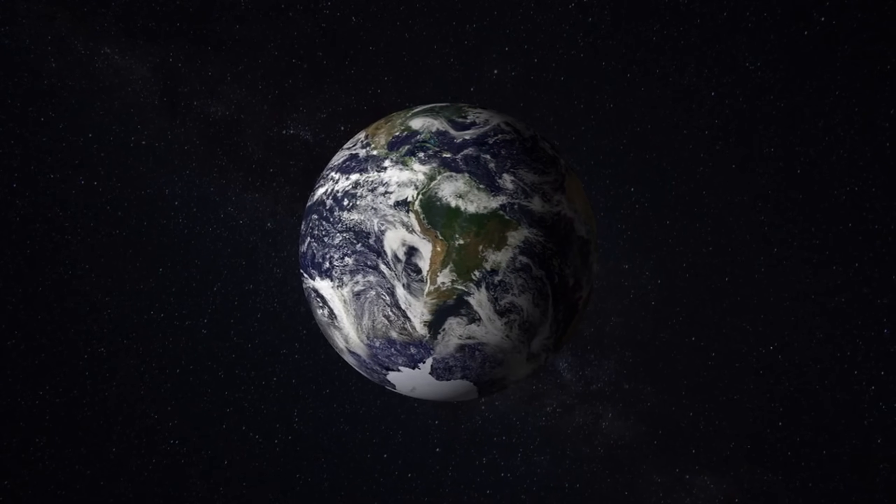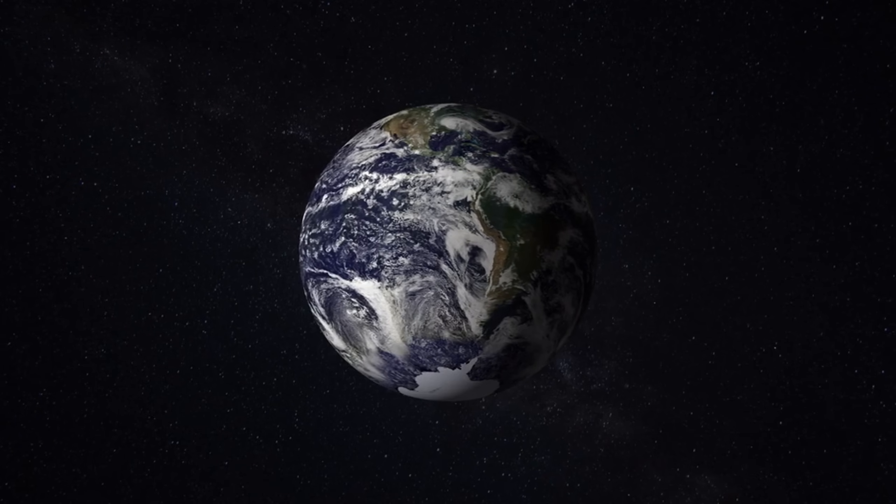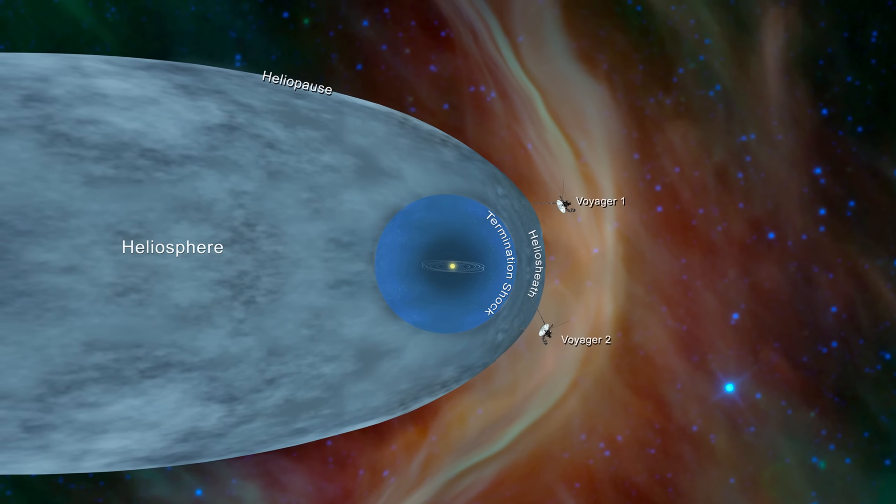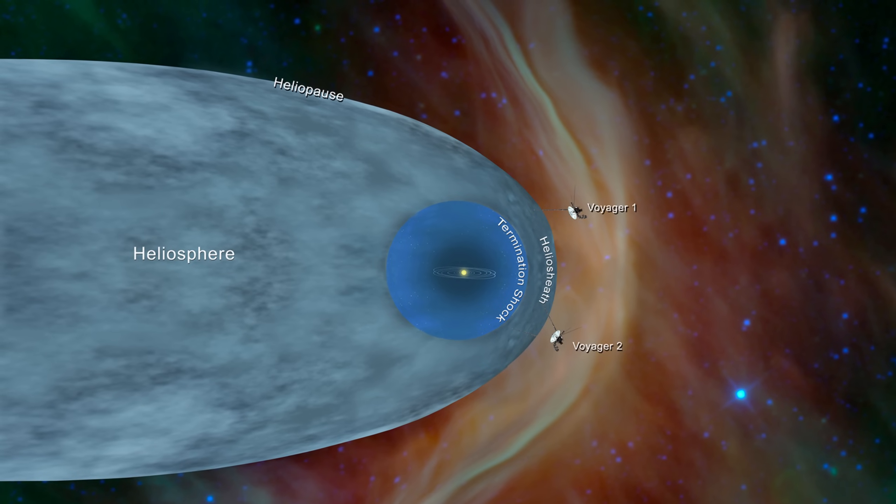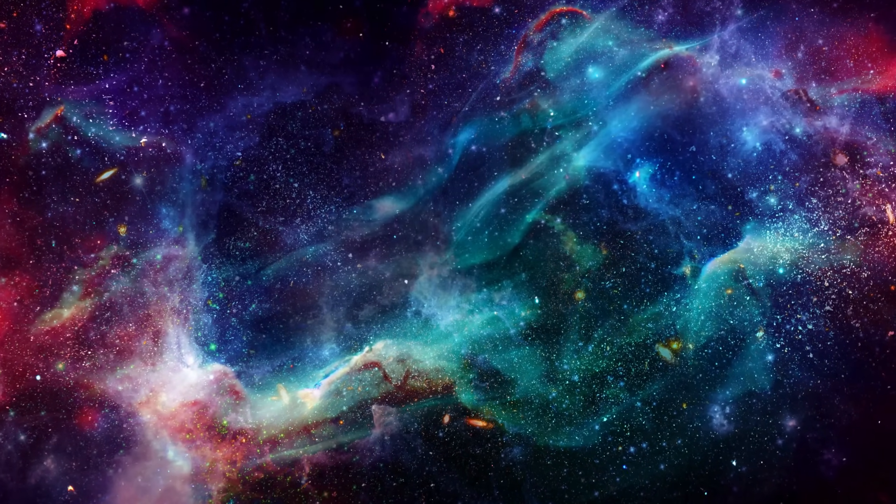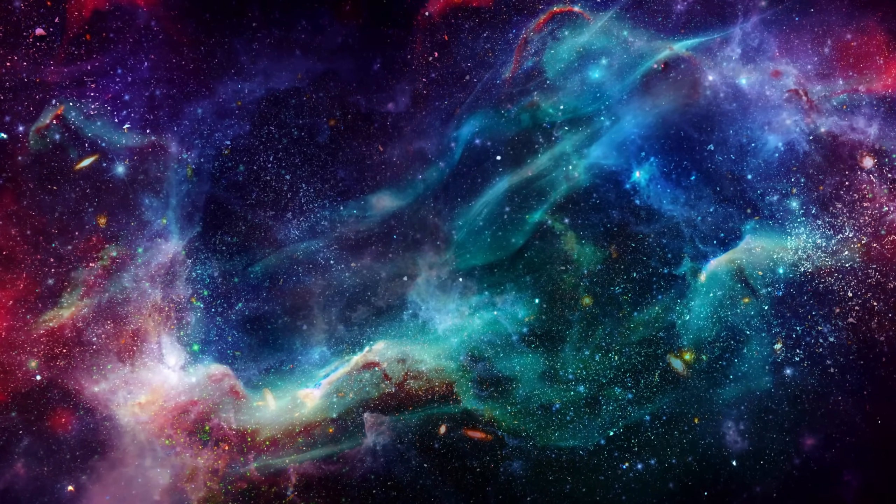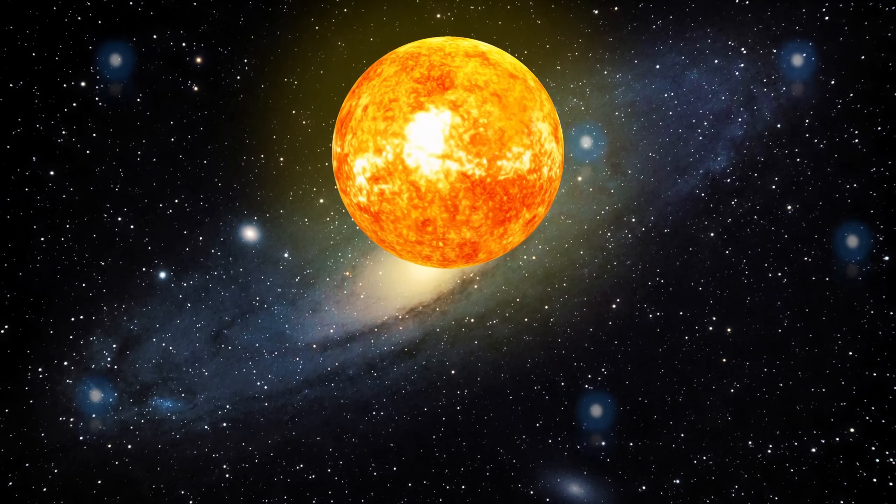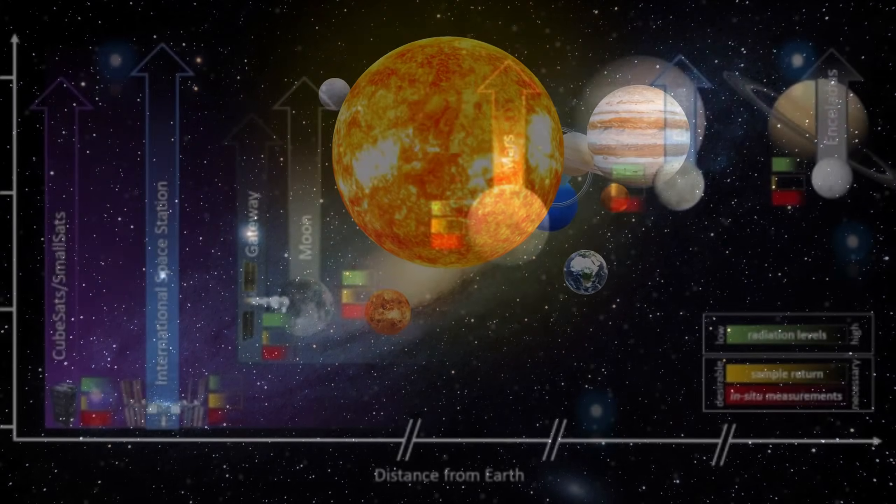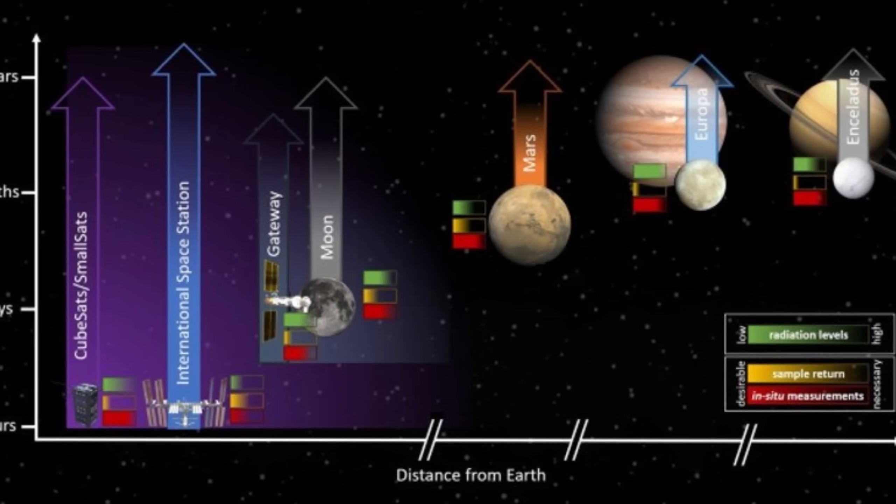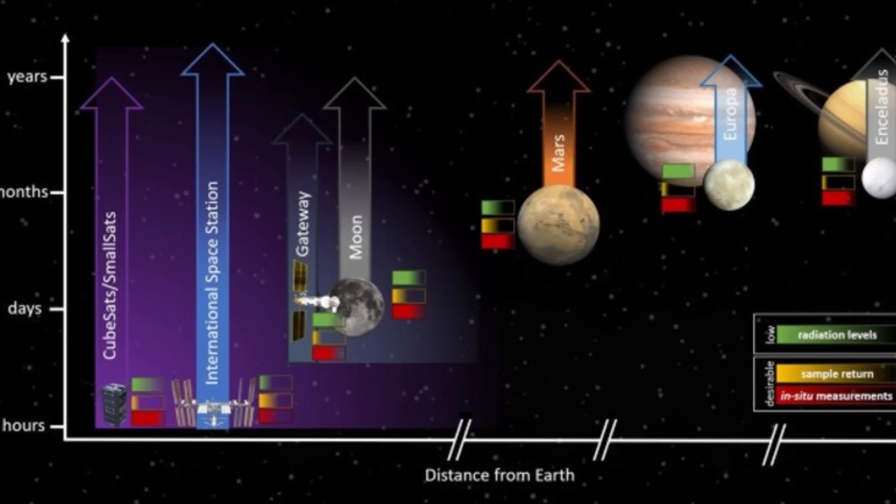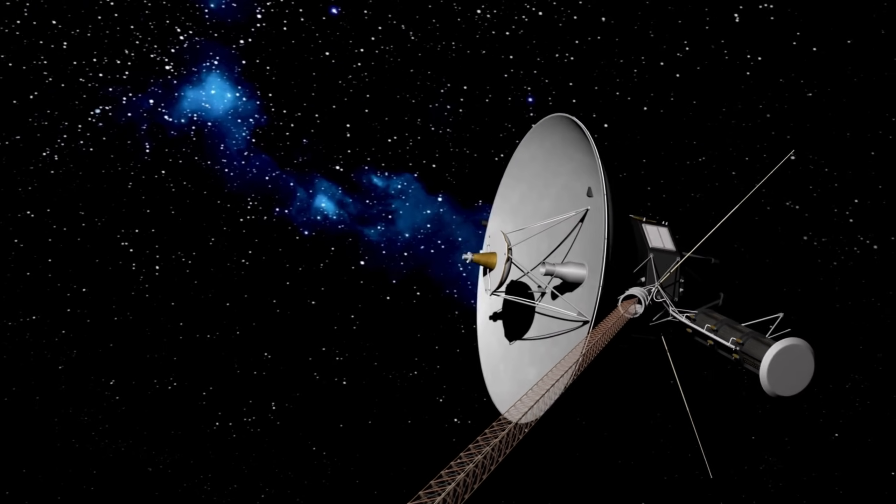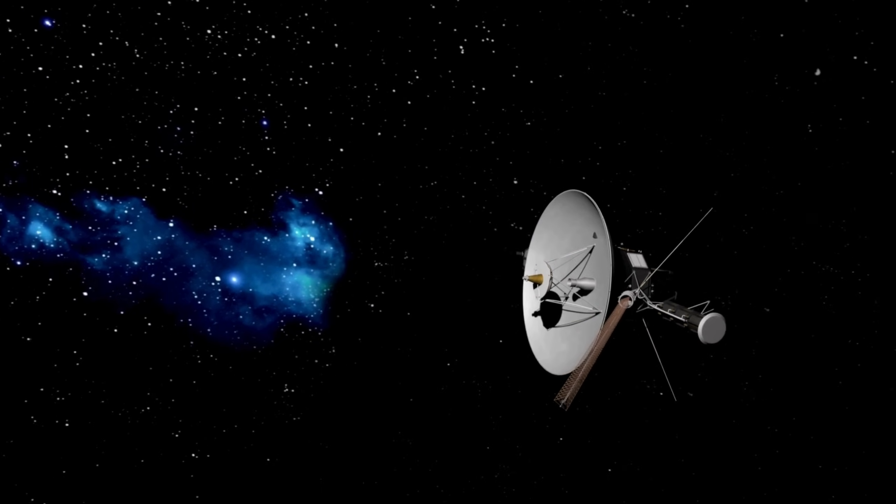The Voyager spacecraft are equipped with a range of instruments designed to explore the outer planets and the interstellar medium. Despite their limited power, these instruments continue to provide invaluable data through groundbreaking observations. Key instruments aboard Voyager include the Imaging Science System, which, although no longer active due to the spacecraft's distance from the Sun, captured stunning images of Jupiter, Saturn, Uranus, Neptune, and their moons. The plasma spectrometer measures plasma, the hot ionized gas found in space, and played a vital role in studying the solar wind and its interaction with the interstellar medium. The cosmic ray subsystem detects high-energy particles, or cosmic rays, from beyond our solar system, providing essential insights into the galactic radiation environment.